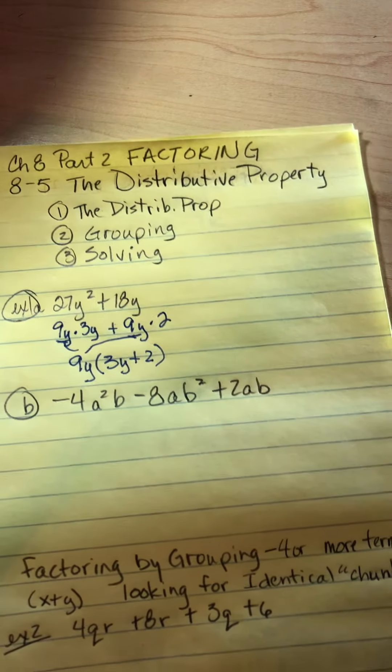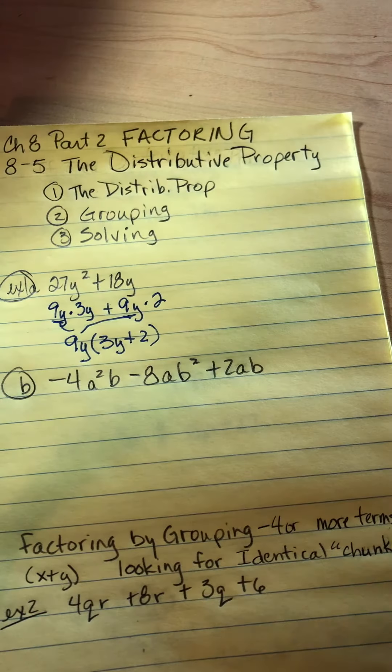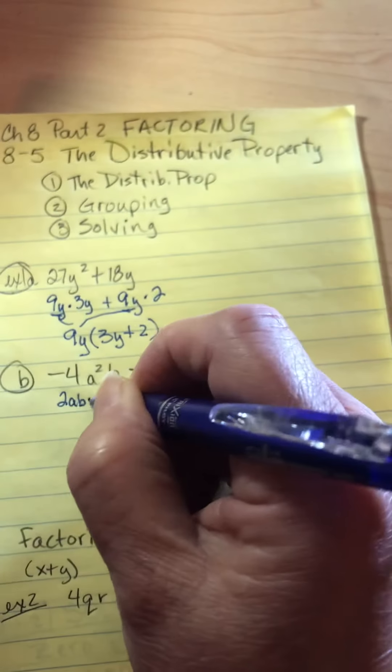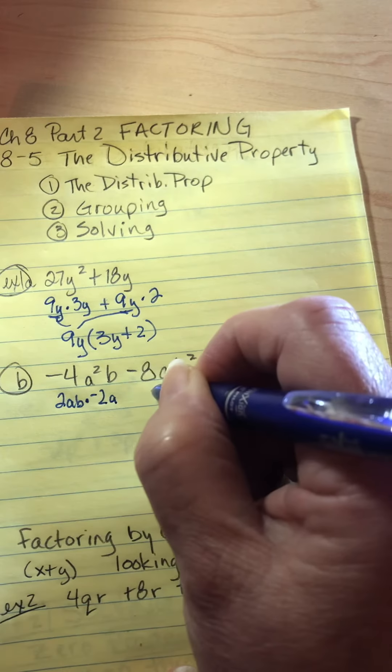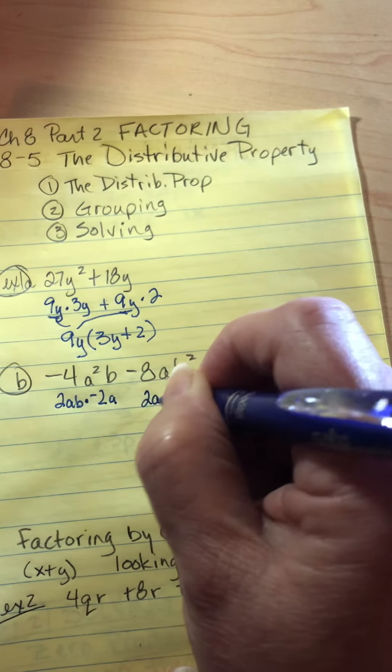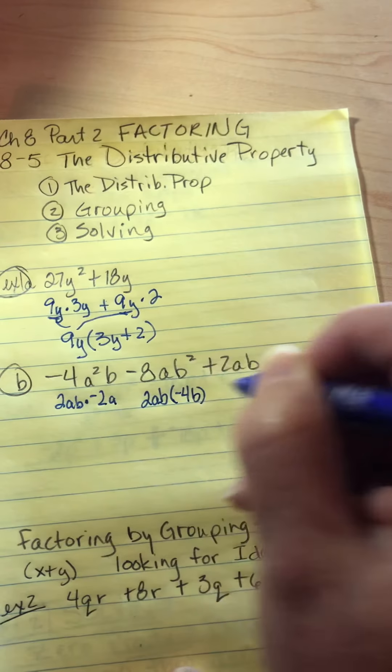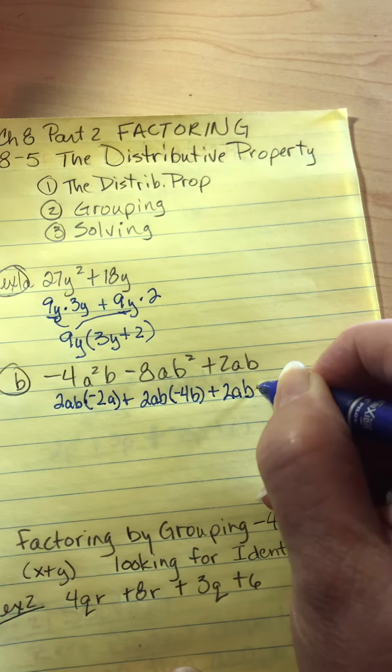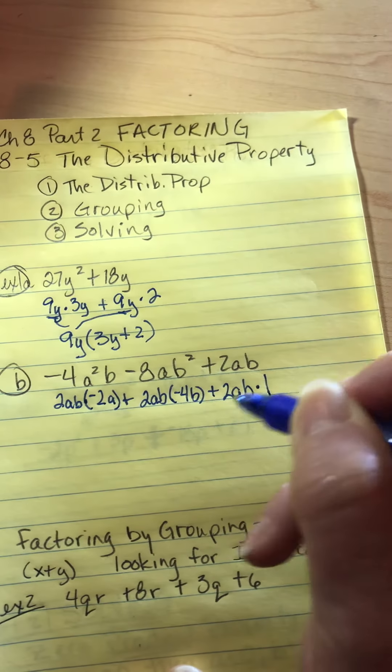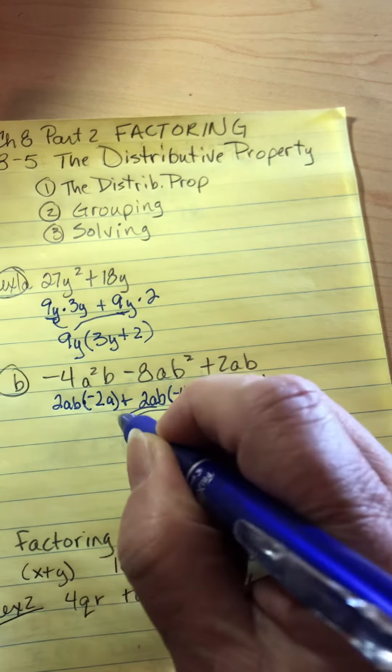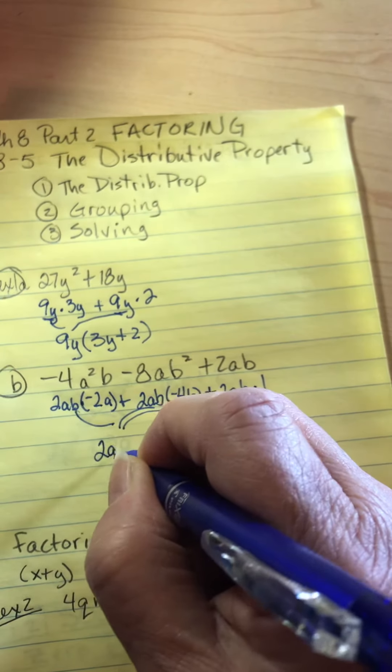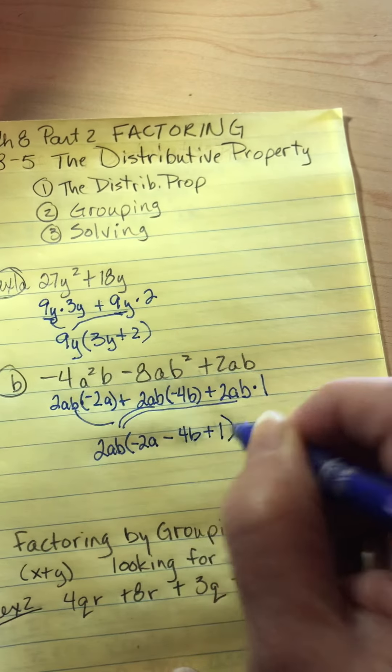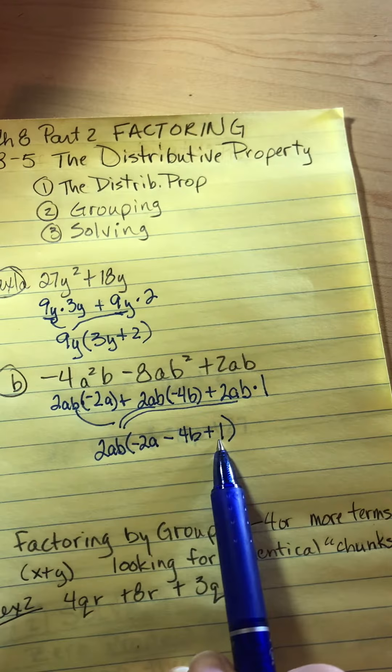In example B, there are three terms. And all of you can look at that and say, hey, they're all even and they all have an AB. So this is 2AB times negative 2A, this is 2AB times negative 4B, and this is 2AB times 1. The one's important. So I'm going to take this 2AB out. And then I have 2AB times negative 2A minus 4B plus 1. I started with a trinomial, I've got a trinomial in my chunk.